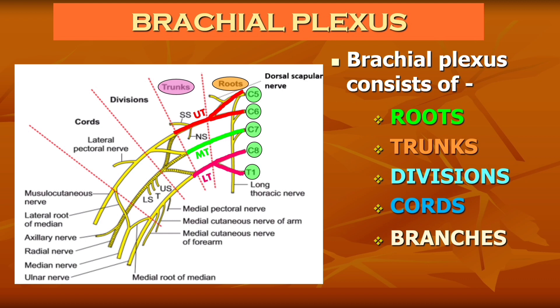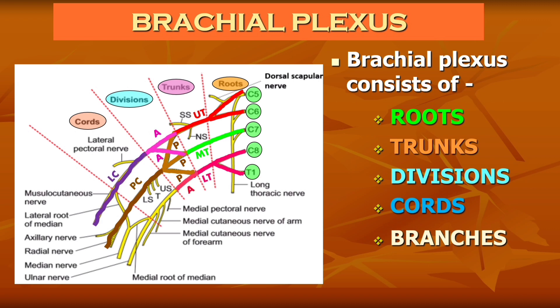Each trunk divides into the anterior and posterior divisions. The anterior divisions are indicated by blue color and the posterior divisions by brown color. These divisions unite to form the cords. Posterior divisions of all three trunks unite to form the posterior cord. Anterior divisions of the upper and middle trunks unite to form the lateral cord. The anterior division of the lower trunk continues as the medial cord. These cords are labeled according to their relation to the second part of the axillary artery.